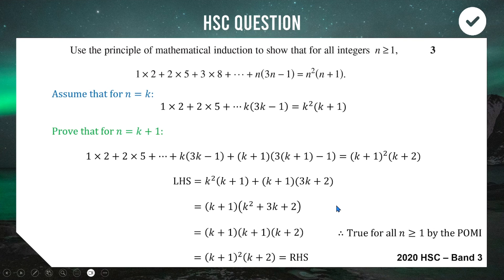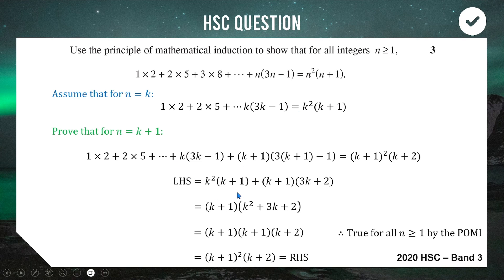Therefore true for all n ≥ 1 by the principle of mathematical induction. So: step 1 is easy, step 2 is just writing stuff down, and step 3 is where you play around with algebra to make the left-hand side look like the right-hand side. As long as you substitute the assumption correctly and can expand and factorize, most of these are very achievable. And if all else fails, write some working and hope the marker believes you — this is called fudging, a very advanced technique.